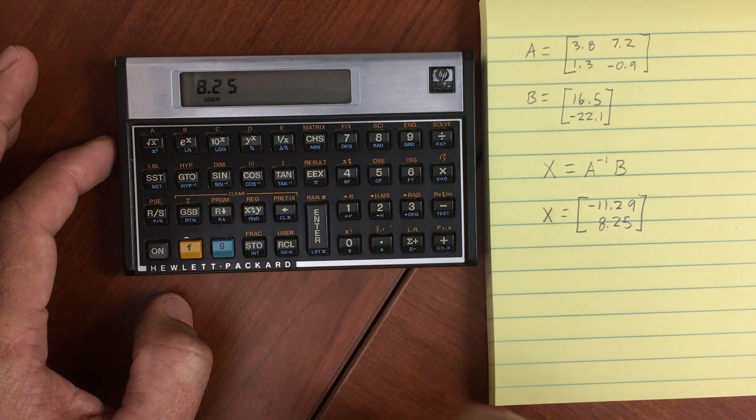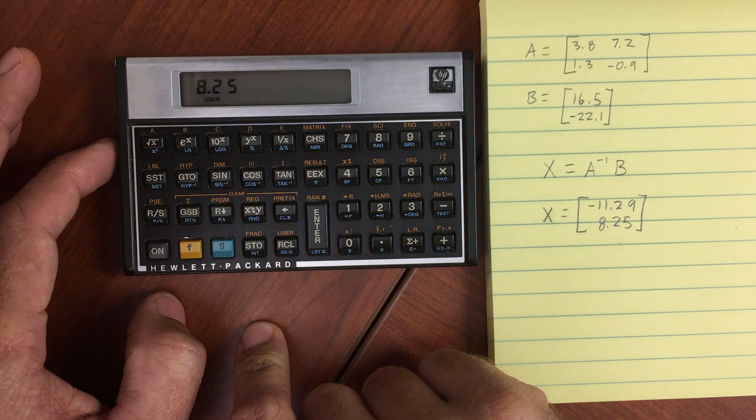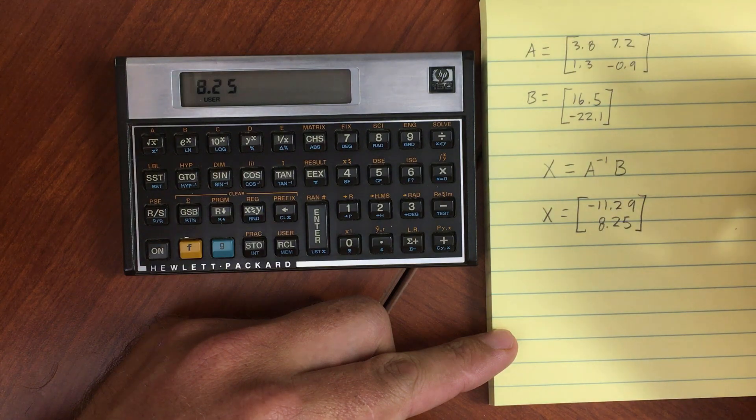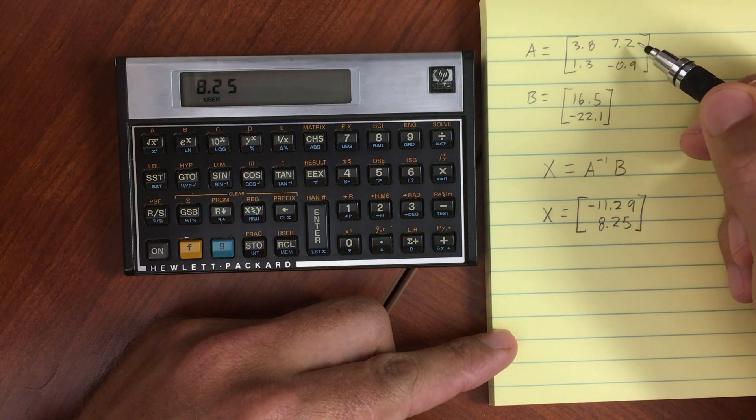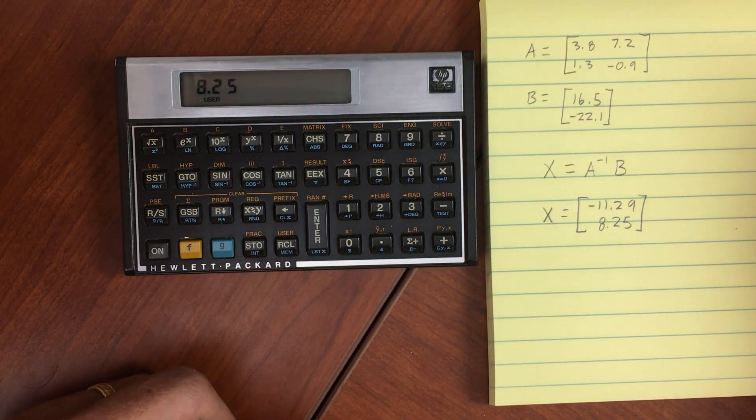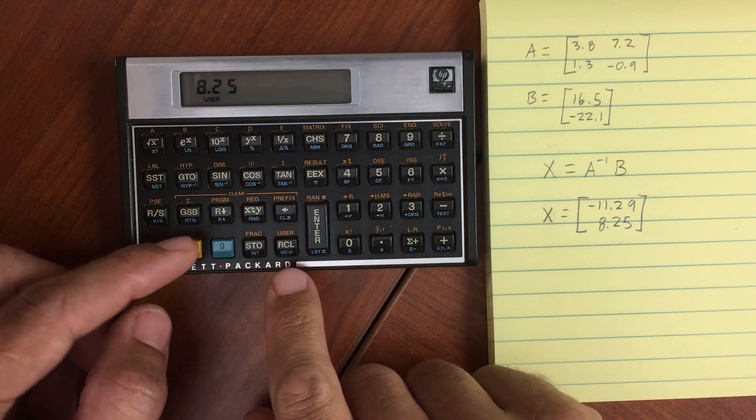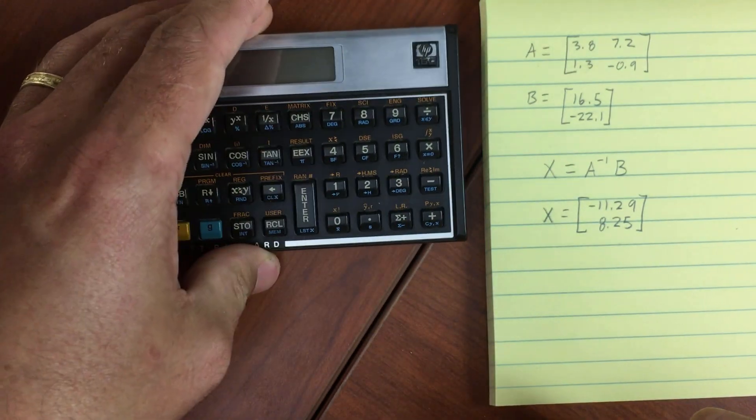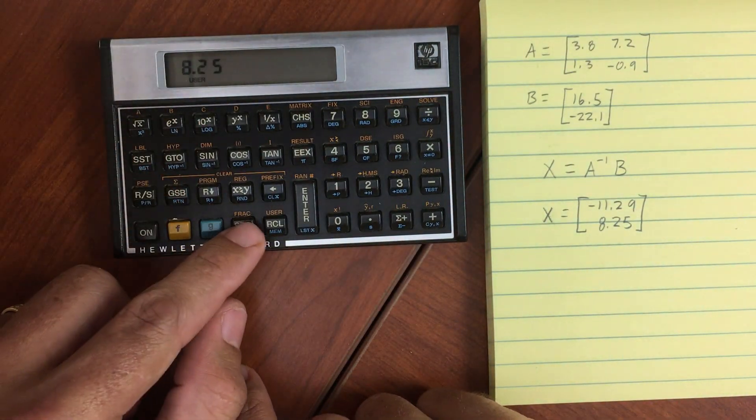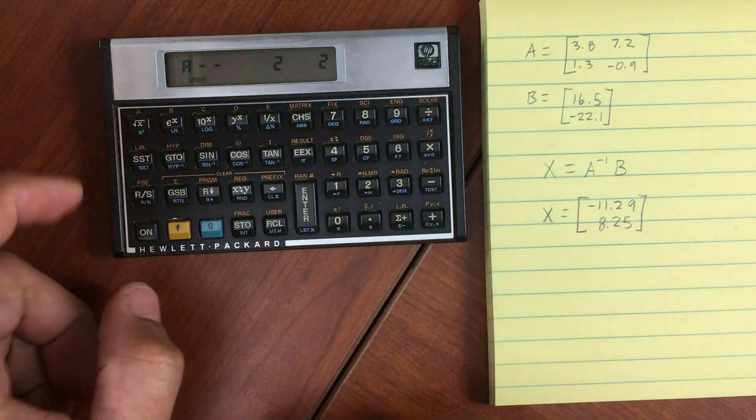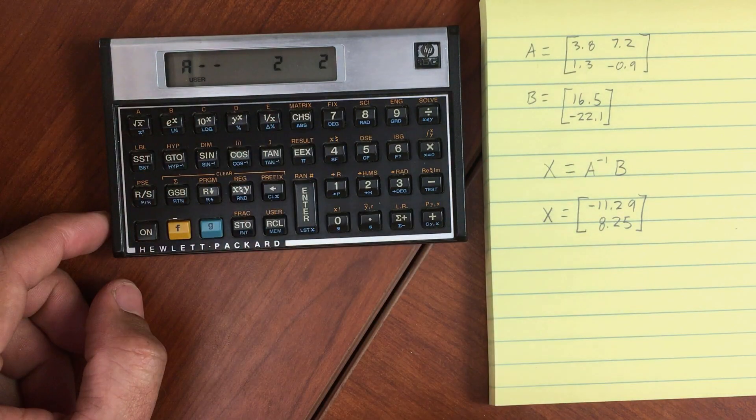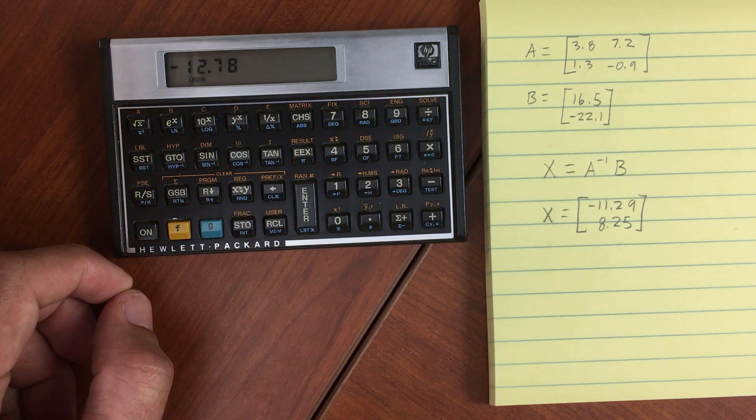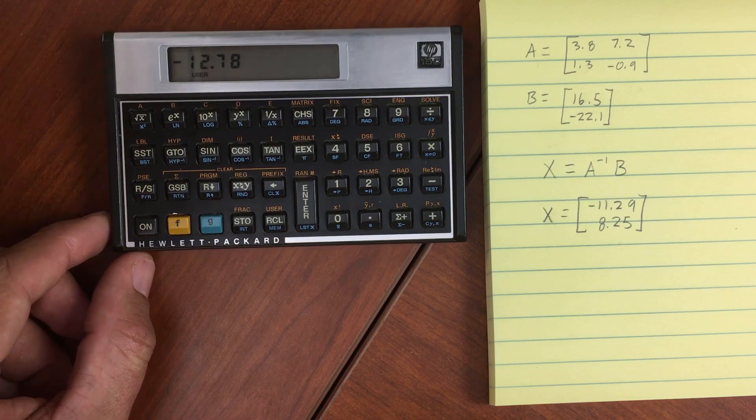Now let's say I took matrix A and I wanted to find the determinant of it. And to define the determinant, it would be negative 0.9 times 3.8 minus 1.3 times 7.2. So roughly somewhere around negative 12. So let's go ahead and find the determinant. Again, look on the back. Determinant is matrix 9. So let's recall matrix A into the stack. Matrix A, 2 by 2. And do our matrix 9 operation on it. Let it run and we get negative 12.78 as the determinant of this matrix.